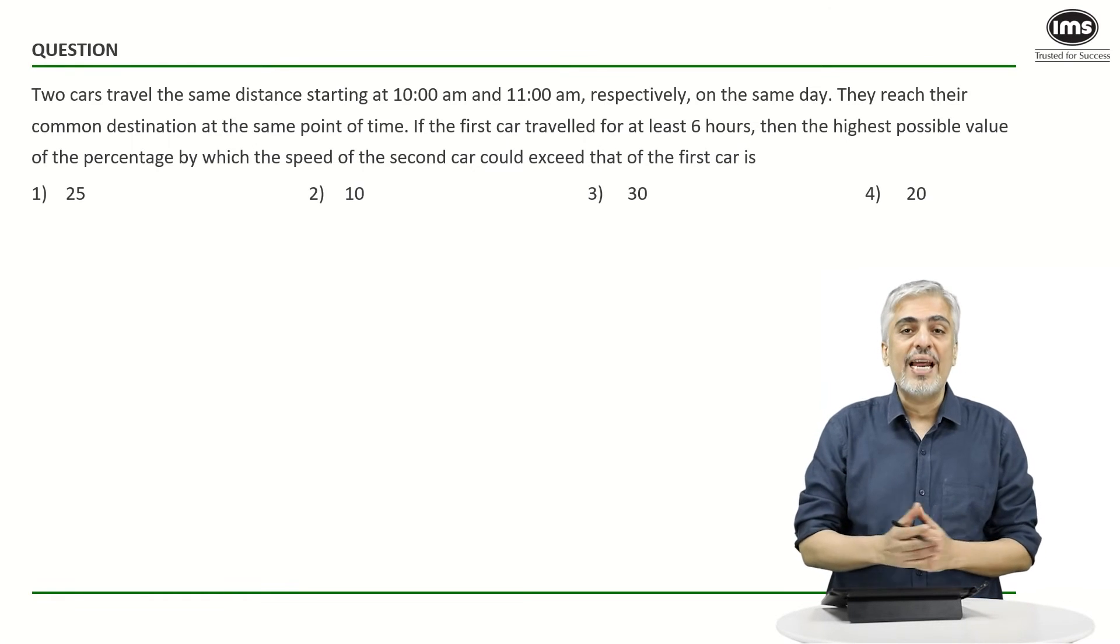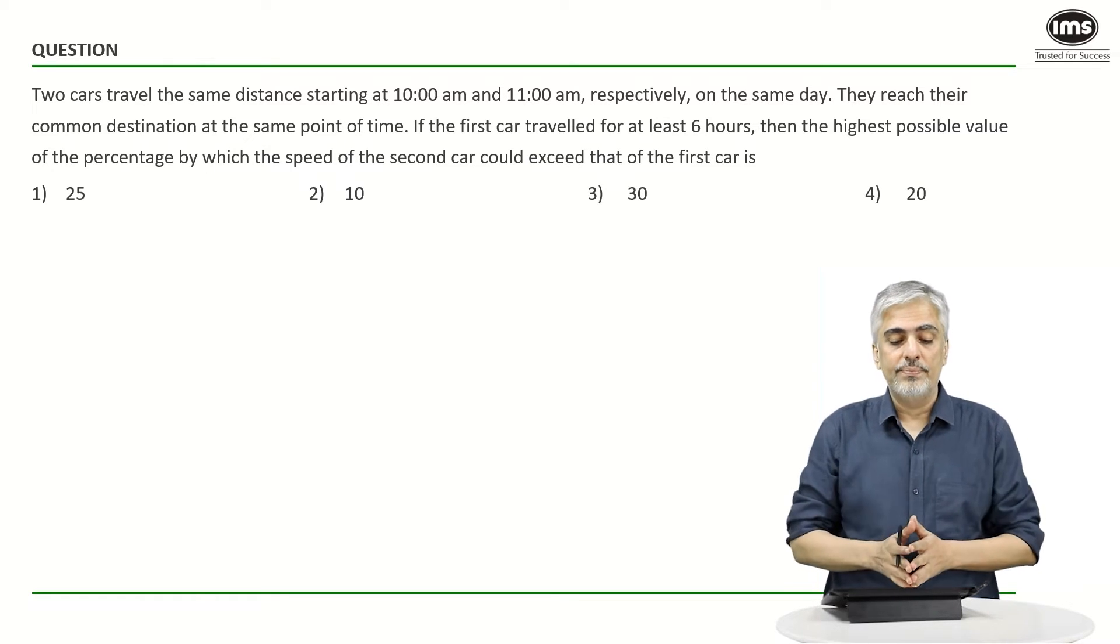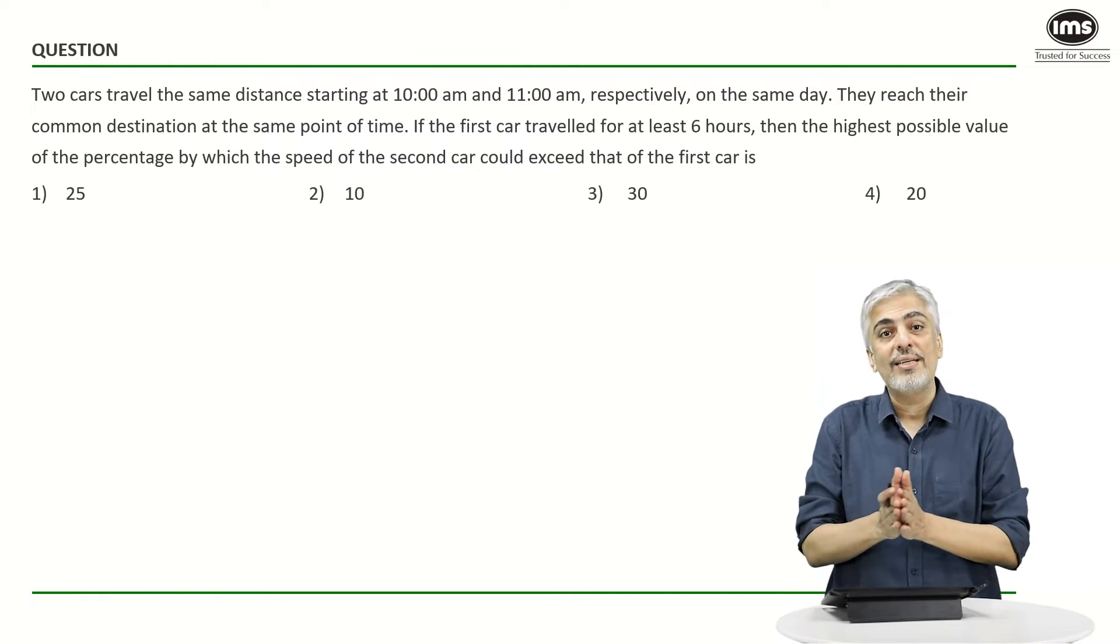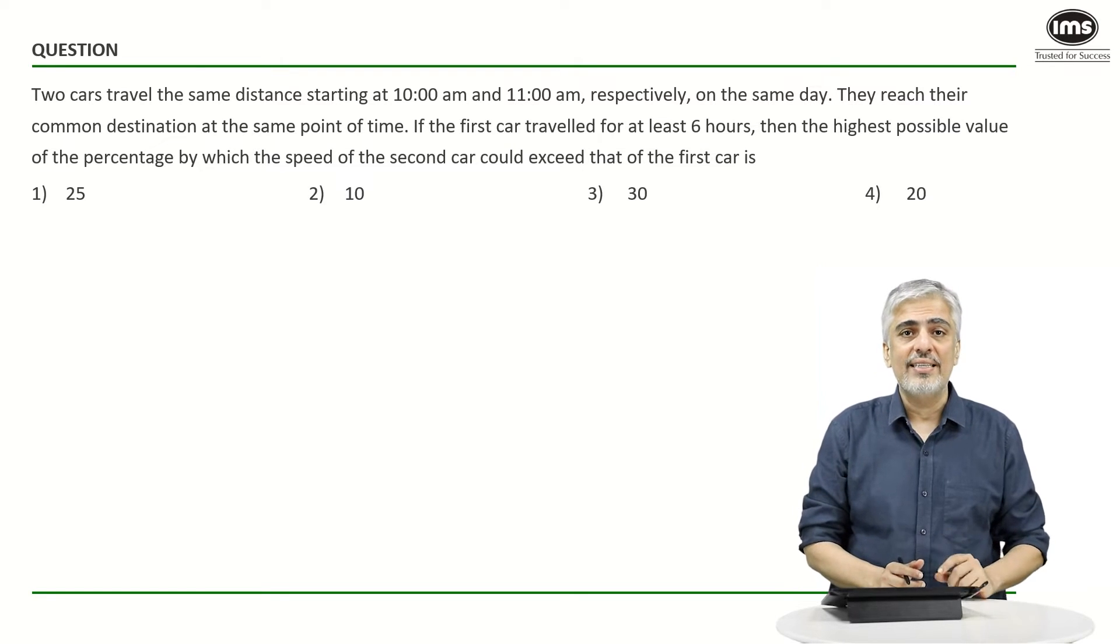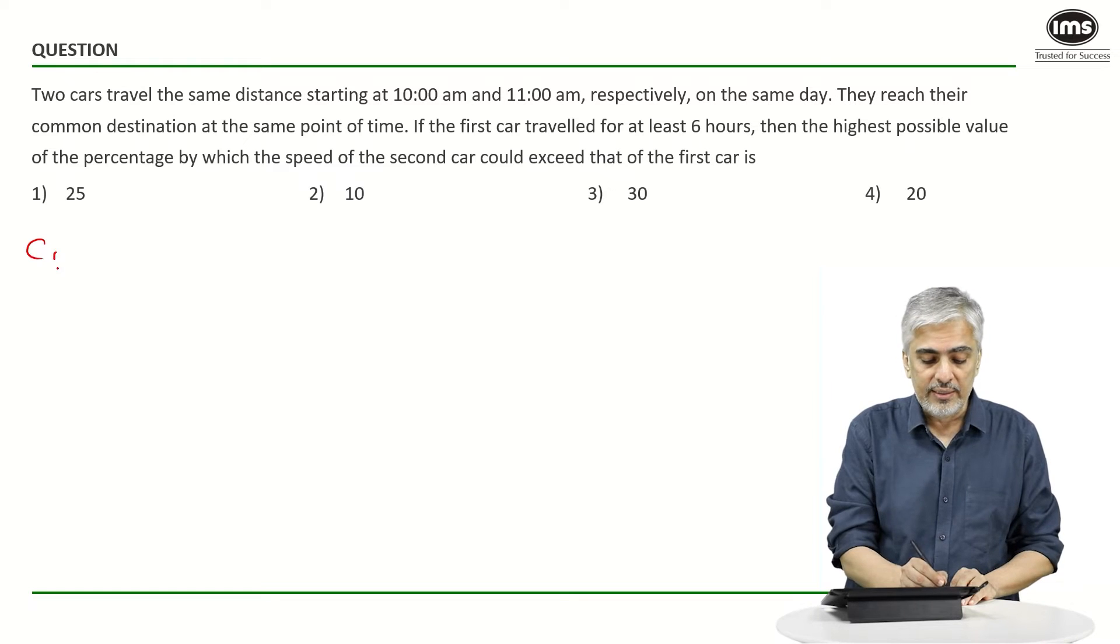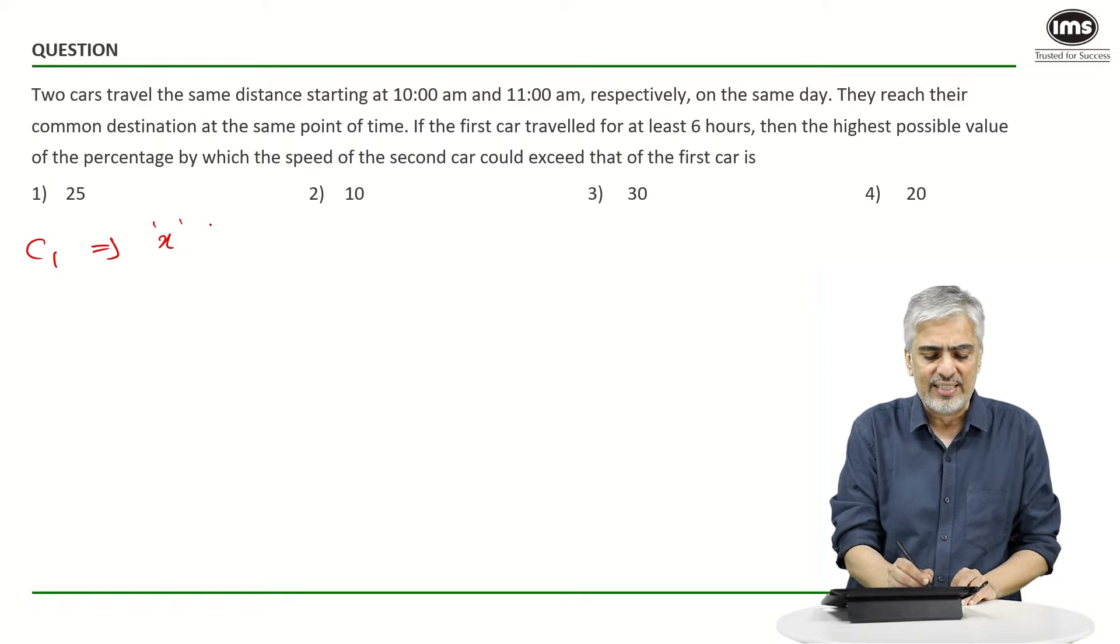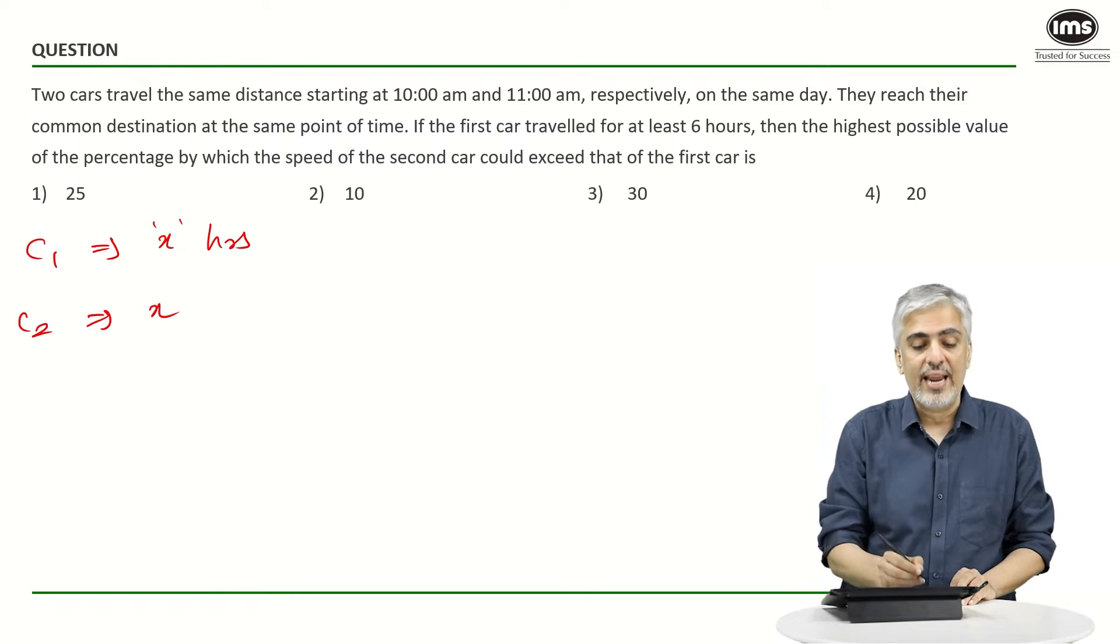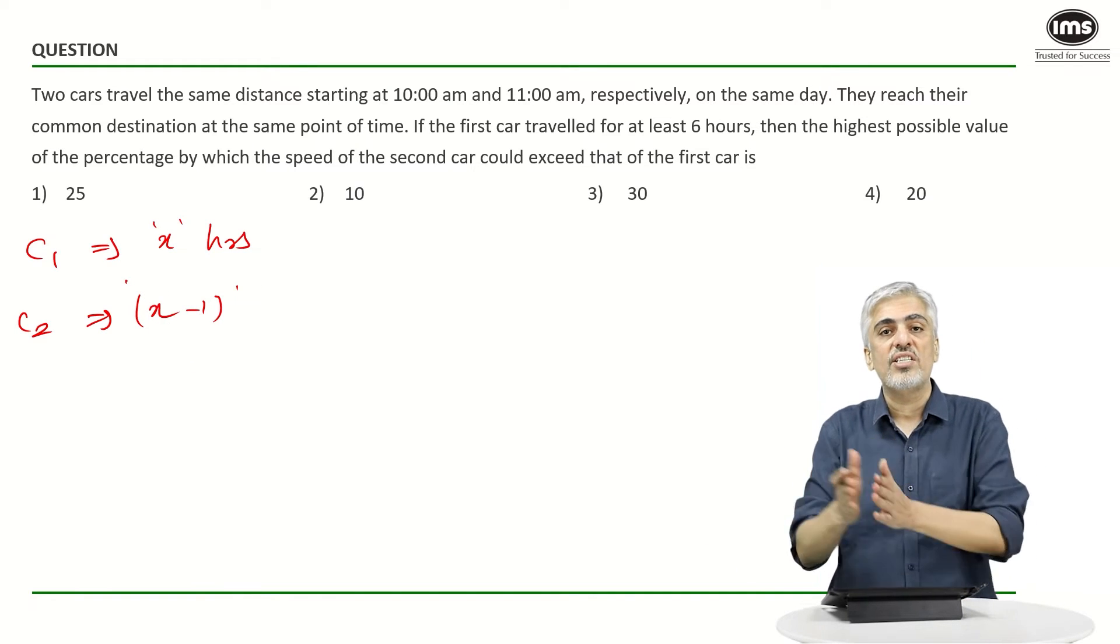This is a question on time-speed-distance but a pretty interesting one. Two cars travel the same distance starting at 10:00 and 11:00 respectively on the same day. So one of the cars has started one hour later. They reach their common destination at the same point of time. So what do you understand? That means car one, for whatever hours it has traveled - suppose it has traveled for x hours - then car two has definitely traveled for x minus one hours because it has started at 11:00. But they reach their destination at the same time.